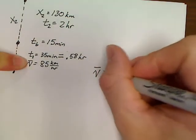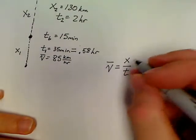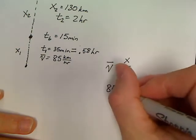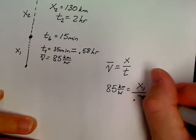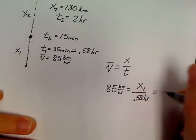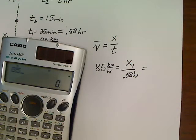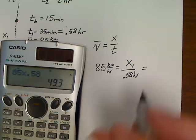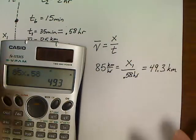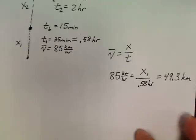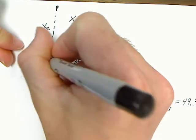Here, we've got time, we've got velocity. Basic equation, velocity is nothing but displacement over time. So, all we have to do is 85 kilometers per hour equals X1 over 0.58 hours. So, 85 times 0.58, we've got 49.3 kilometer displacement for this first leg.